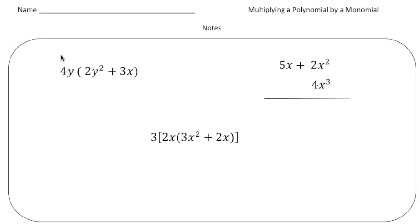So the first problem we have is 4y times 2y squared plus 3x. And the way you do this is you have to multiply the 4y times the 2y squared and also the 4y times the 3x. And you have to use the distributive property to do that. So 4y times 2y squared is going to be 8y to the third power plus 4y times 3x will be 12xy.